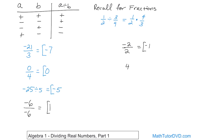What if we have 49 divided by negative seven? Divide the numbers: 49 divided by seven gives you seven. Since the signs are different, the answer is negative seven. The rules are exactly the same as for multiplication, which is why we can go through this so quickly.